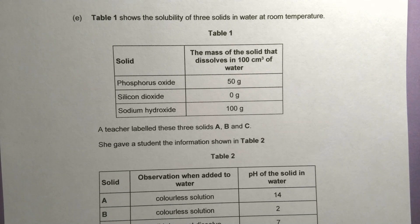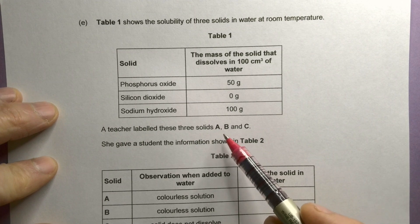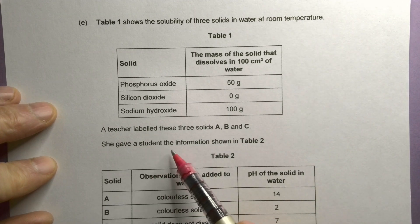Part E. Table 1 shows the solubility of three solids in water at room temperature. Got a table there. A teacher labeled these three solids A, B and C.